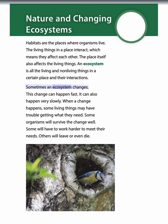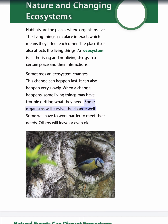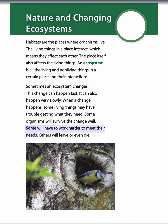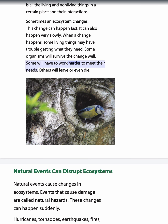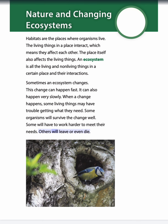Sometimes an ecosystem changes. This change can happen fast, or it can happen very slowly. When a change happens, some living things may have trouble getting what they need. Some organisms will survive the change well, some will have to work harder to meet their needs, and others will leave or even die.